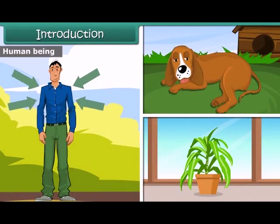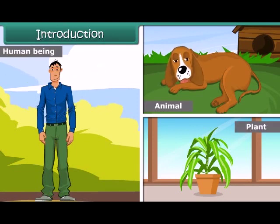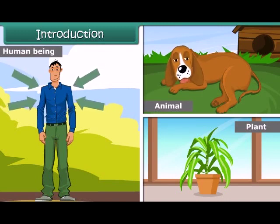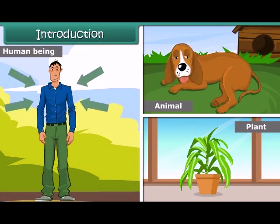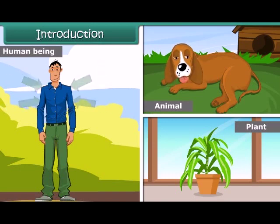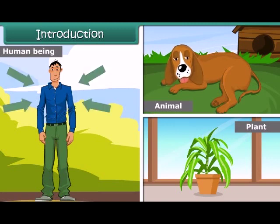Introduction: Human beings, animals, and plants depend on oxygen to survive. While some animals resemble human beings in their techniques of respiration, some others have completely different respiratory mechanisms. Plants also have a unique way of breathing. In this lesson, we will study respiration in plants and animals in detail.